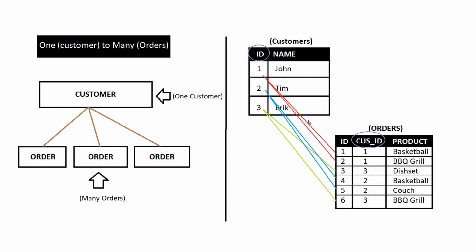The first relationship we're going to discuss is the one-to-many relationship, and the example I like to think of is a customer-to-an-order relationship. In this example, we have a single customer that has placed three different orders. A customer can place as many orders as they would like, but a single order can only have reference to one customer — this creates a one-customer-to-many-orders relationship, a one-to-many relationship.